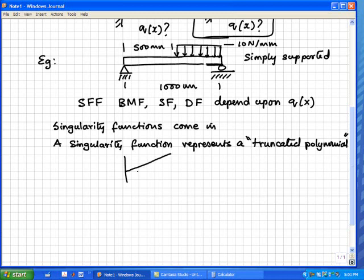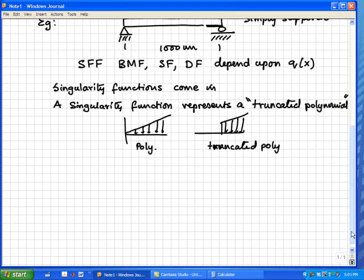That is the linear function. But suppose I had something like this where it starts abruptly and then it is linear. This is polynomial, this is a truncated polynomial. How do we do these kinds of things? The idea is the following: let us look at our simplest singularity function which represents a very simple truncated constant function. It is called a step function.